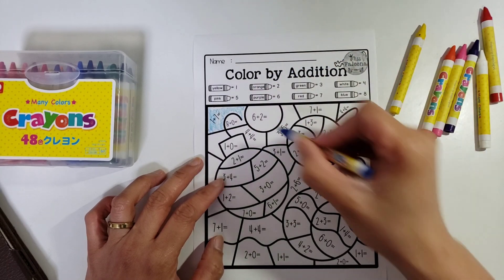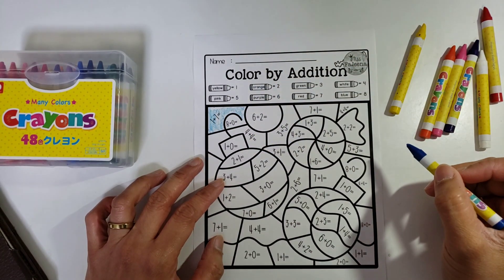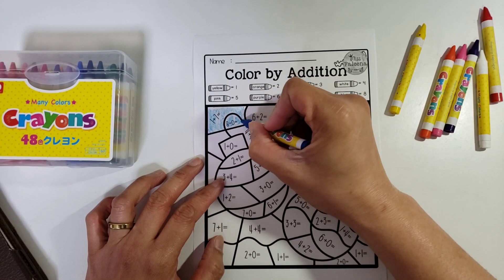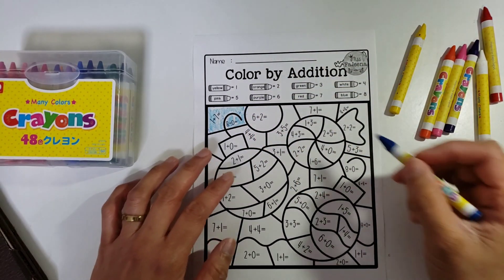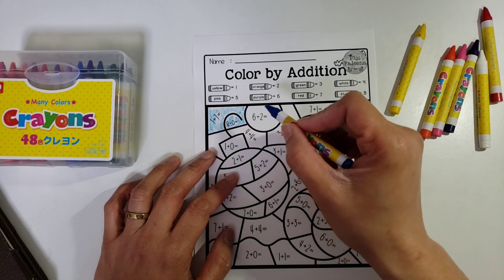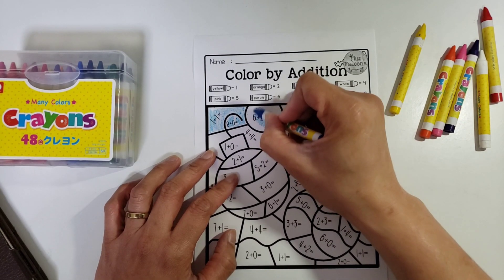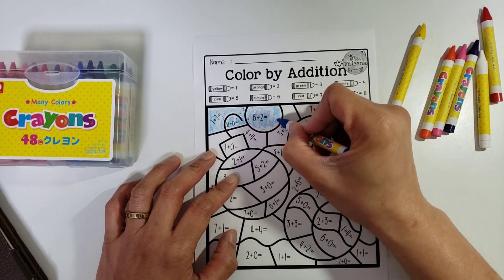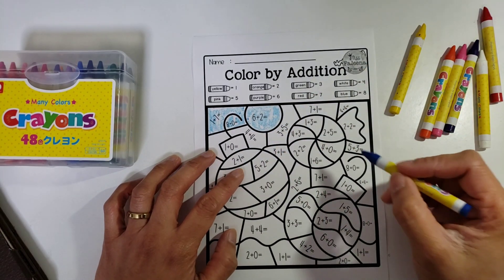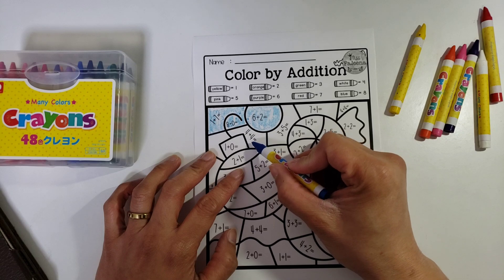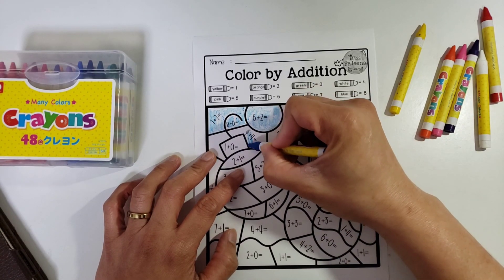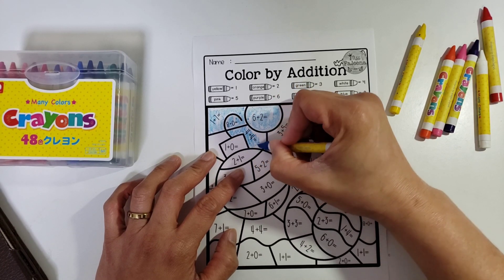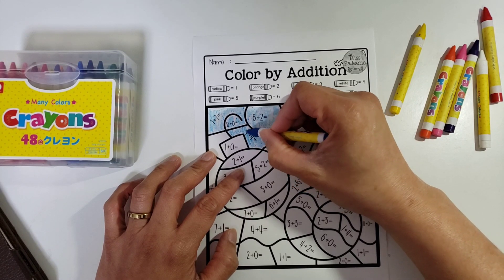And then eight plus zero equals eight, so it's still blue. And then the next one is six plus two, still it's eight, so that's still blue. Here also it's four plus four equals eight, so it's still blue. So you can discover what is really the color of this template.